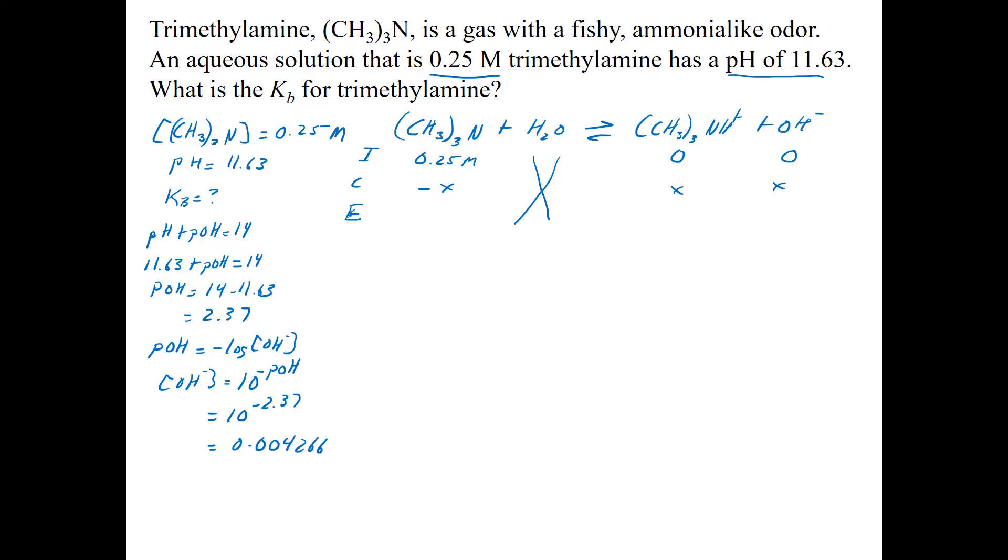So that is my hydroxide ion concentration, 0.004266. And since it's 0 plus X is equal to this, that means X is equal to this. So this is 0.004266 molar. All of these are molar. And this is going to be 0.25 minus 0.004266 to give me 0.2457 molar.